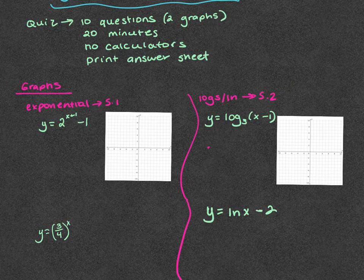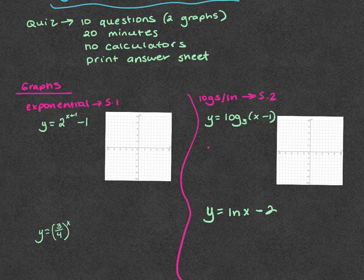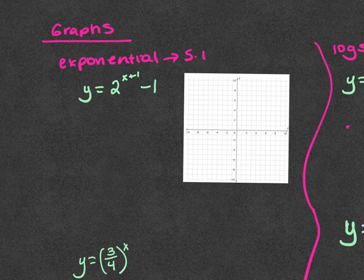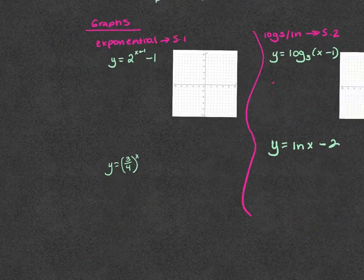The left ones are the exponential graphs — those are from section 5.1 — and the ones on the right are from 5.2, those are your logs. They are going to be questions one and two, so they come at the beginning and then the rest follow. It's not necessarily in the order of your sections. With the exponential ones, let me duplicate that graph before I draw it.